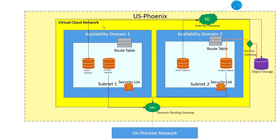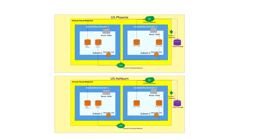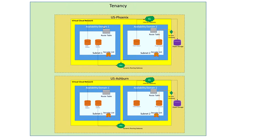We didn't talk about tenancy and compartment yet. Consider you have more than one region — this is quite possible. You might have your live instance in one region and your disaster recovery instance in another region. Tenancy grouping is at a higher level; it's a logical grouping. You have one tenancy and can subscribe to as many regions as you want within that tenancy. When you log in, you are given a tenancy assigned to your user, and under that tenancy you can subscribe to multiple regions.